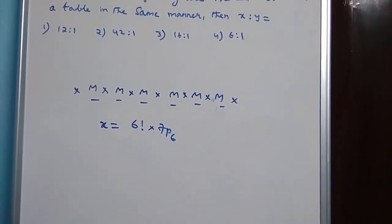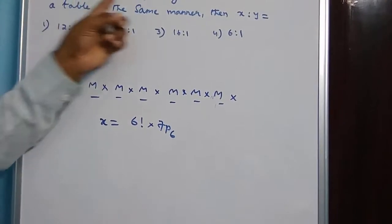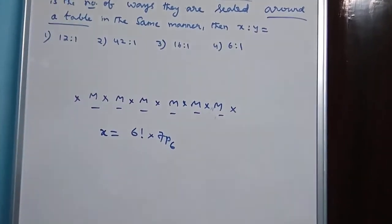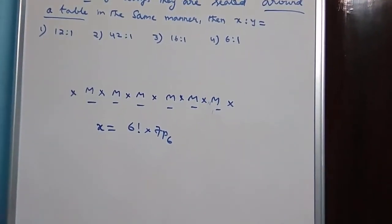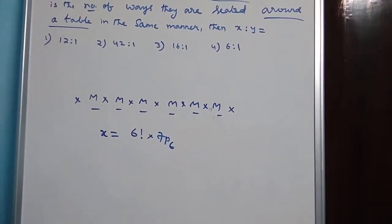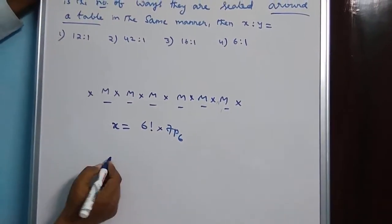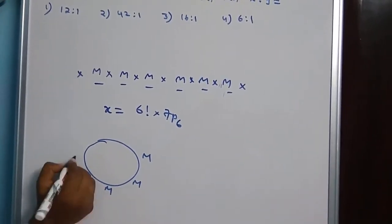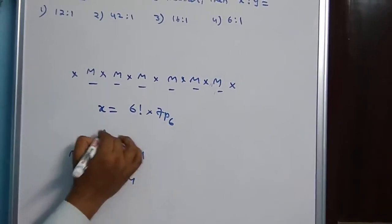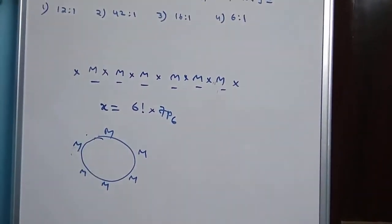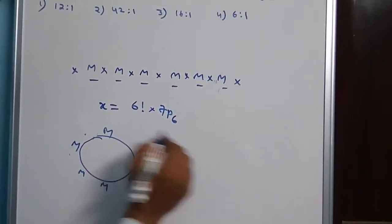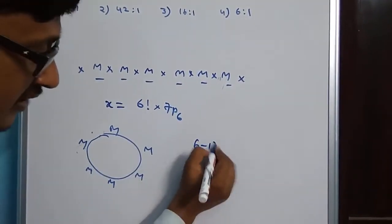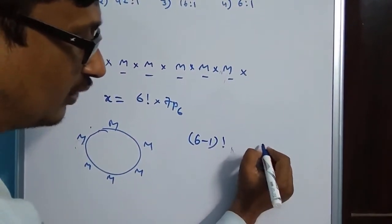The number of ways in which 6 women and 6 men can be arranged in a row so that no 2 women are together — first arrange 6 men in 6 factorial ways, then fill the 7 gaps with 6 women in 7P6 ways. So the required permutation is 6 factorial into 7P6. This is X. Now, what is Y? Y is the number of ways they are seated around a table — this is a circular permutation. As this is a circular permutation, the number of ways in which 6 men can be arranged around a circle is 6 minus 1 factorial, that is 5 factorial.